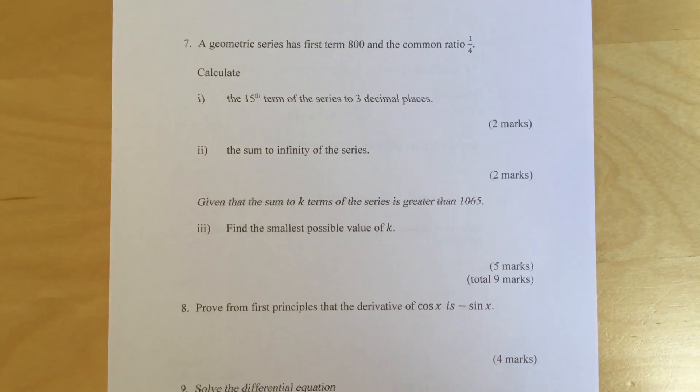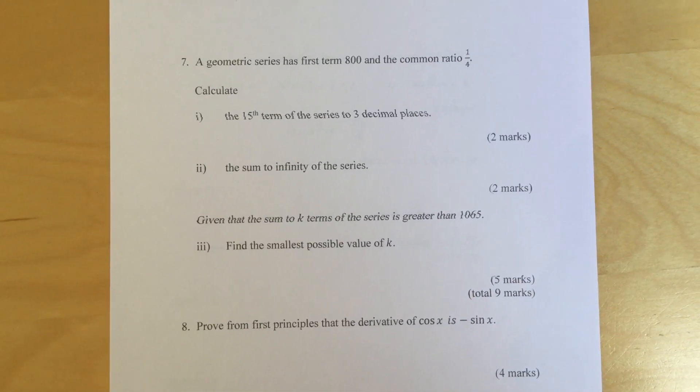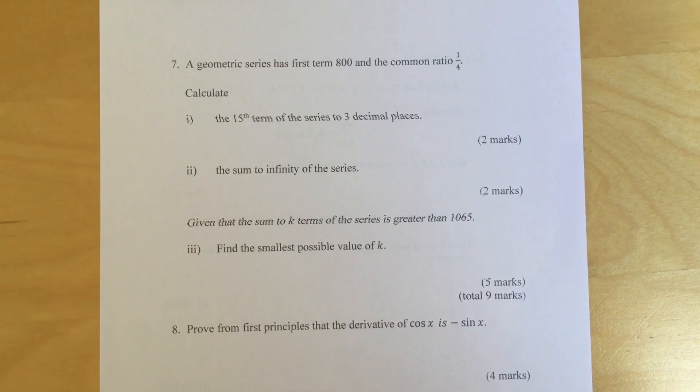Given that the sum to k terms of the series is greater than 1065, find the smallest possible value of k.